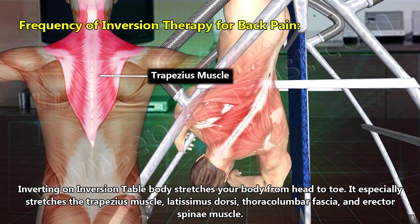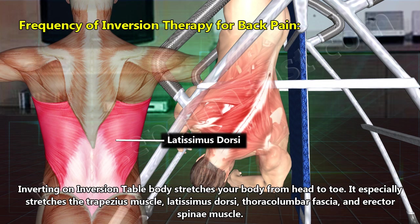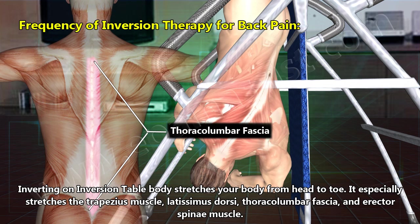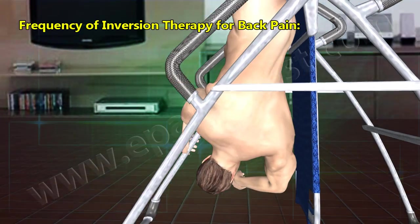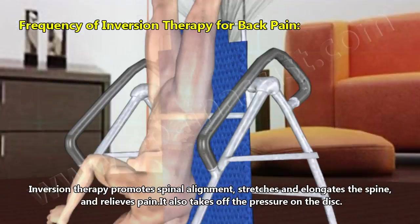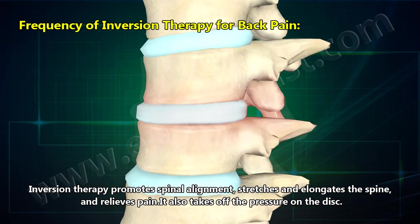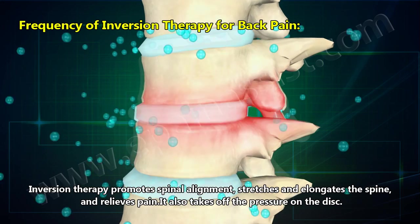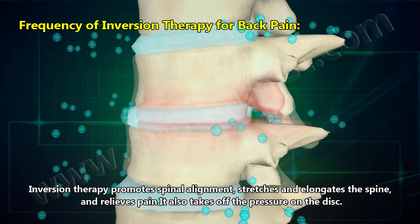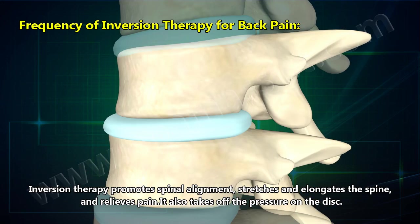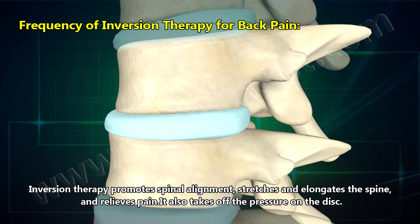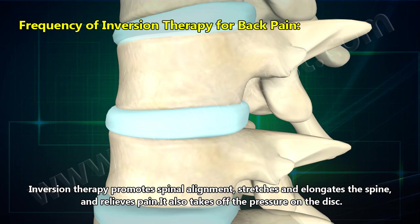It especially stretches the trapezius muscle, latissimus dorsi, thoracolumbar fascia, and erector spinae muscle. Inversion therapy promotes spinal alignment, stretches and elongates the spine, and relieves pain. It also takes off the pressure on the disc.